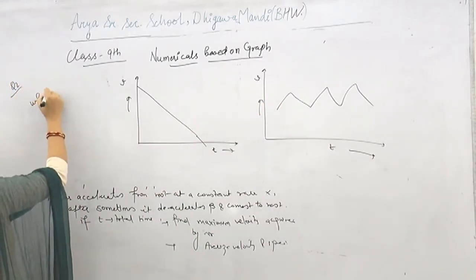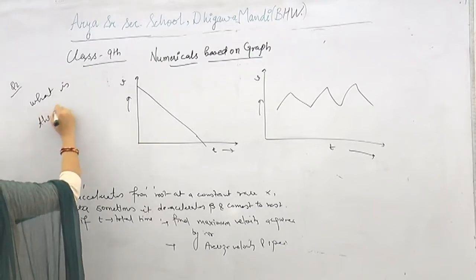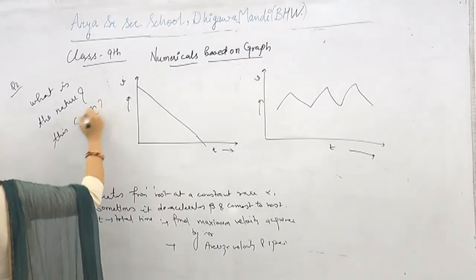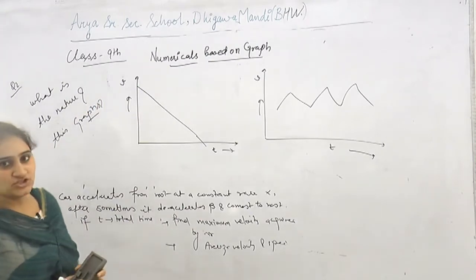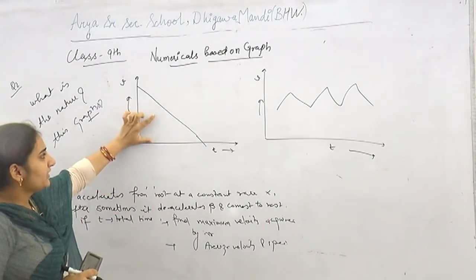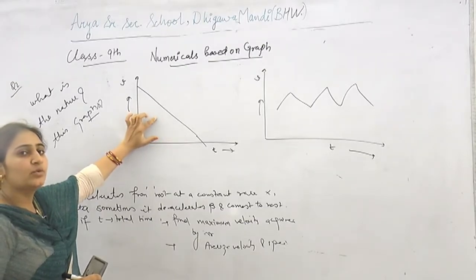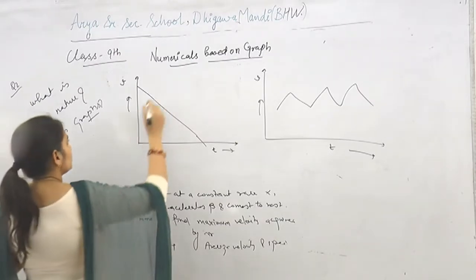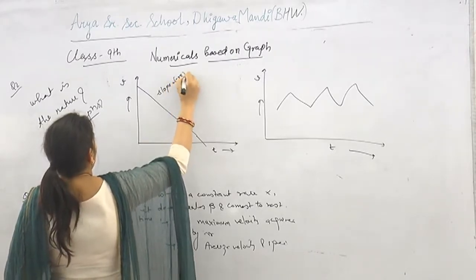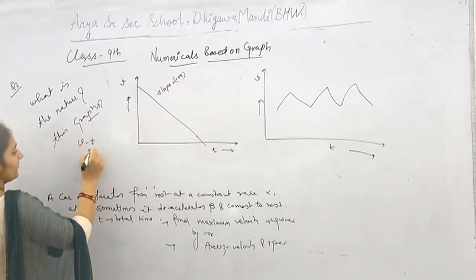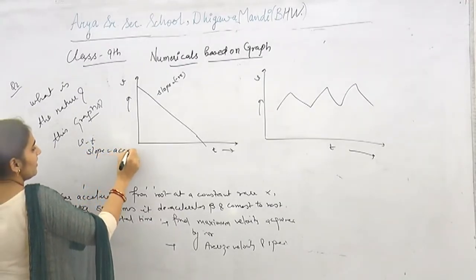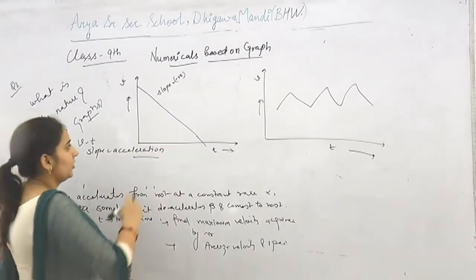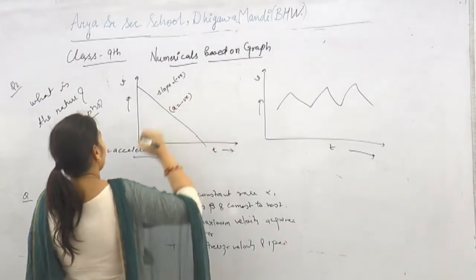Question 2 asks: what is the nature of these graphs? For the first VT graph, the slope is negative. Since the slope of a VT graph gives acceleration information, the acceleration is negative.